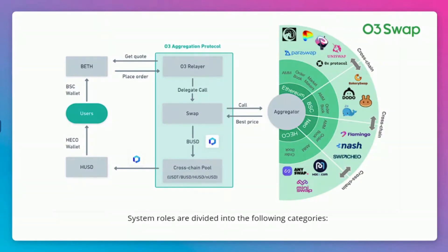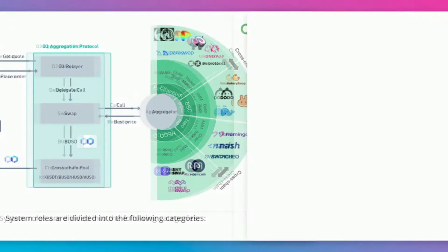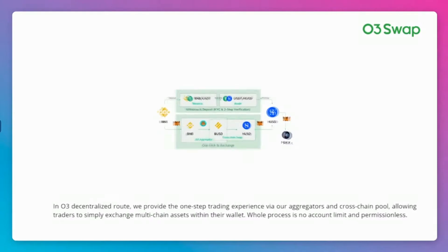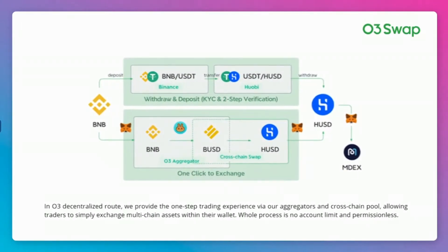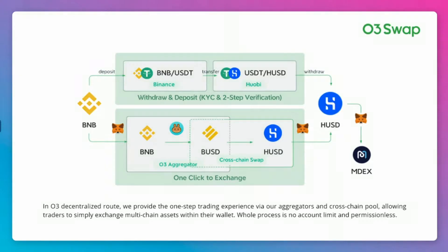For example, in a centralized route, trading BNB on MetaMask to HUSD on MDEX is a complicated process — traders must deposit to a centralized exchange, execute transactions twice with KYC, then withdraw to a decentralized wallet and DEX. In O3's decentralized route, we provide a one-step trading experience via aggregators and cross-chain pool, allowing traders to simply exchange multi-chain assets within their wallet. The whole process has no account limits and is permissionless.